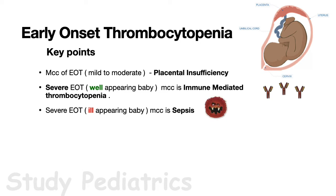Other causes of early onset thrombocytopenia include birth asphyxia and DIC. DIC, or disseminated intravascular coagulation, is most commonly due to sepsis but can also be due to birth asphyxia.